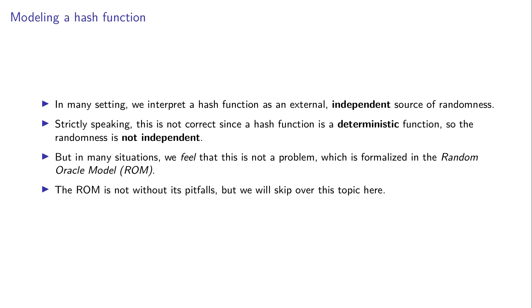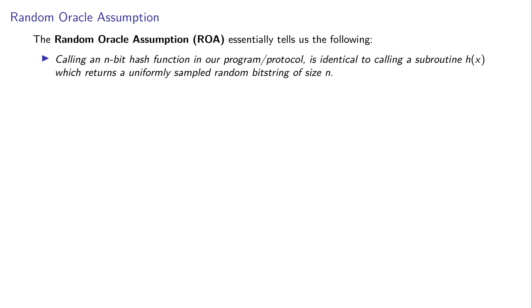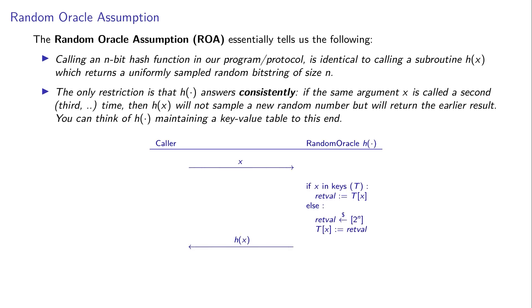So the random oracle model essentially tells us the following: when you call an n-bit hash function in your program or your protocol, this would be identical to calling a subroutine H which returns a uniformly sampled random bit string of the same size. So here you can see it, you call a function X and what you get is a random number which is the H of X.